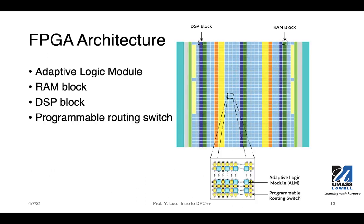Inside FPGA, we can typically find these different components. The adaptive logic module is essentially the resource you can use to implement combinational logic and registers. RAM blocks are resources for storing data that you can access randomly. DSP blocks are built-in hardware specialized processing logic that can perform signal processing or floating point operations very efficiently. And lastly, we have programmable routing switches that you can use to connect different adaptive logic modules, RAM blocks, or DSP blocks.